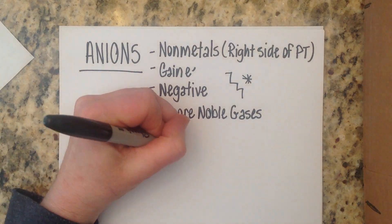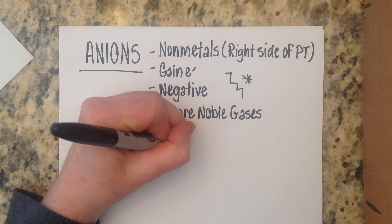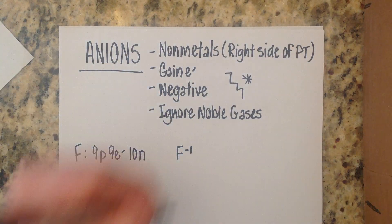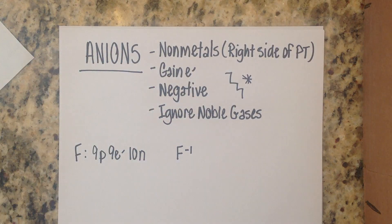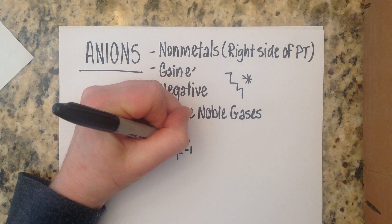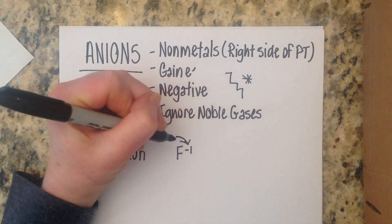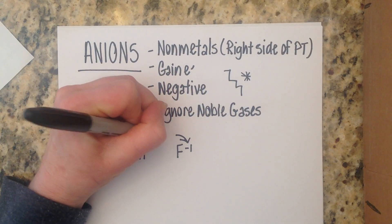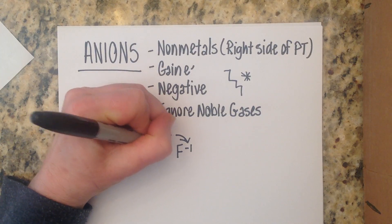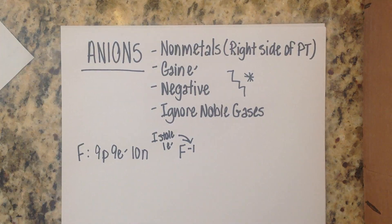And when we look at the mass which is 19 subtract nine we have 10 neutrons. And we also know that when fluorine becomes an anion it has a negative one charge that negative one is like that fluorine saying hey guys look at me I just stole an electron.